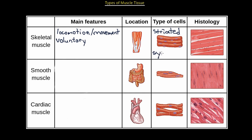Another important thing to know about skeletal muscle is the notion of syncytium. Syncytium basically means that each cell, or each cellular unit — which would be the muscle fiber — contains multiple nuclei. As you can see, there are multiple nuclei on each cell. They're usually attached to the skeleton, which transforms into the tendon, and the tendon attaches to the bone.